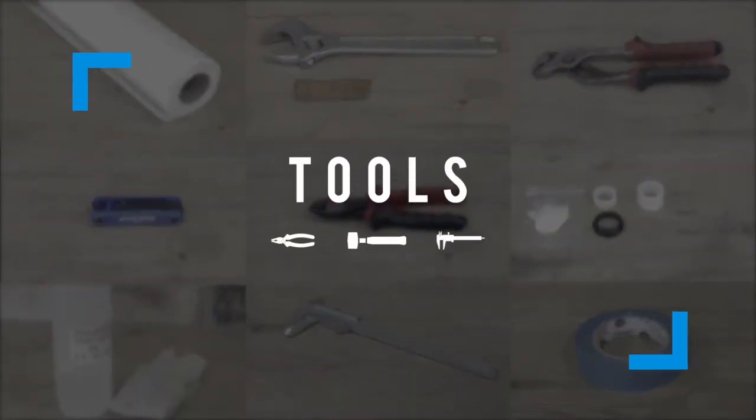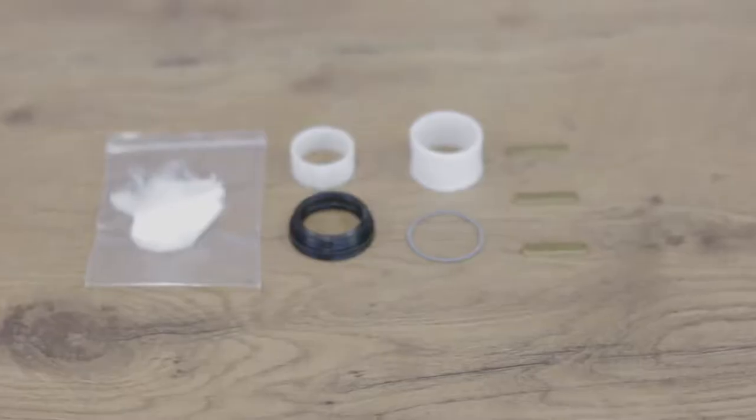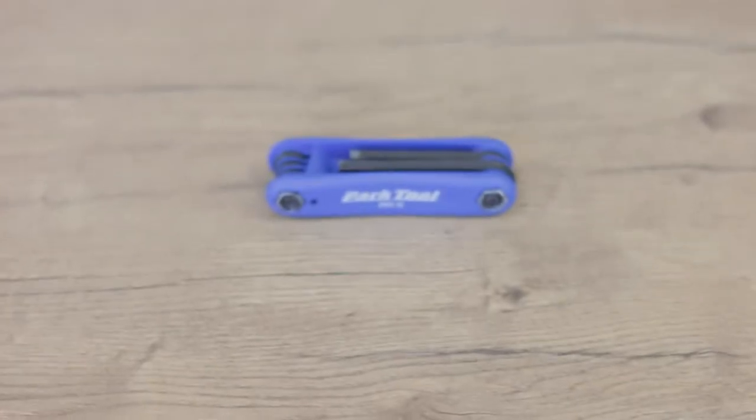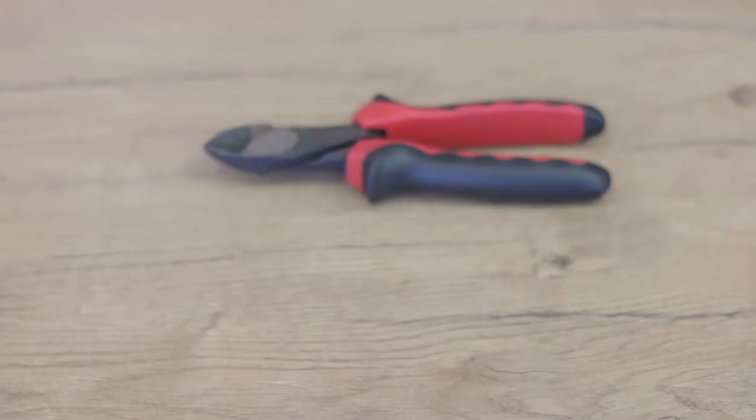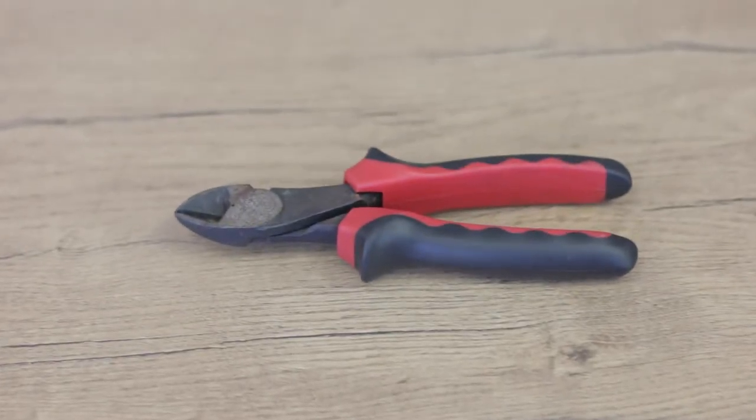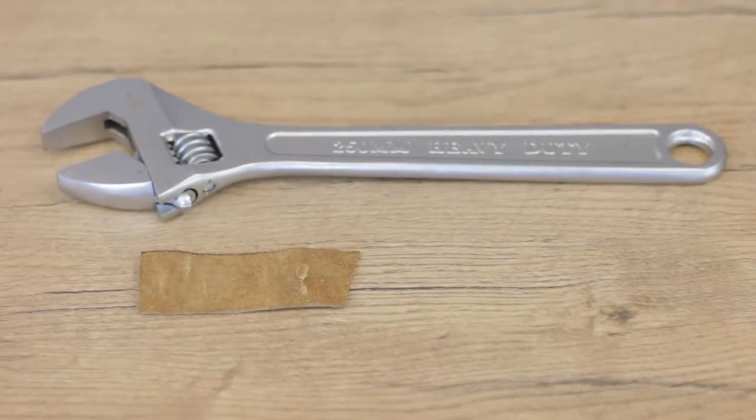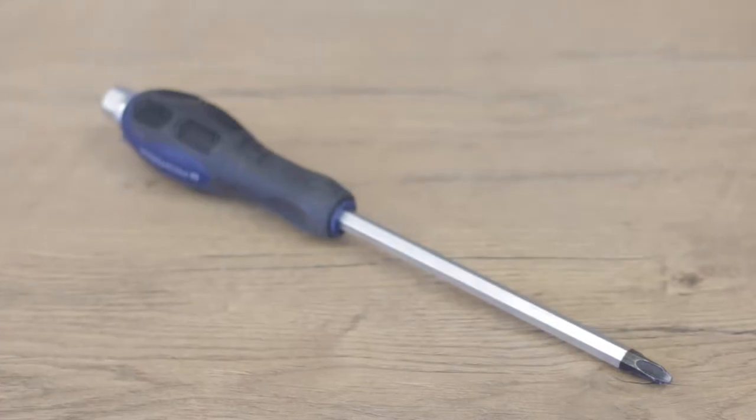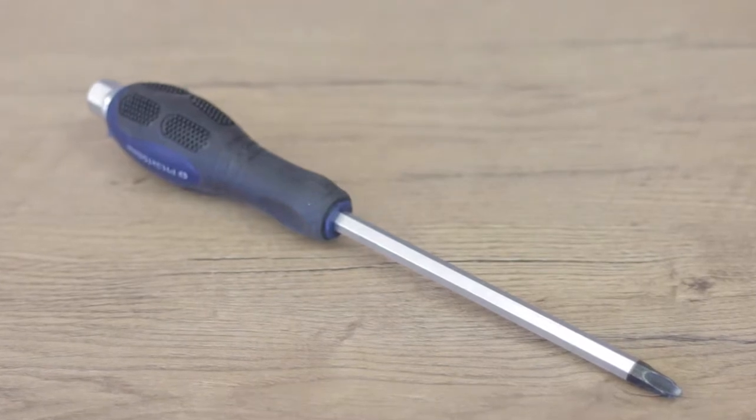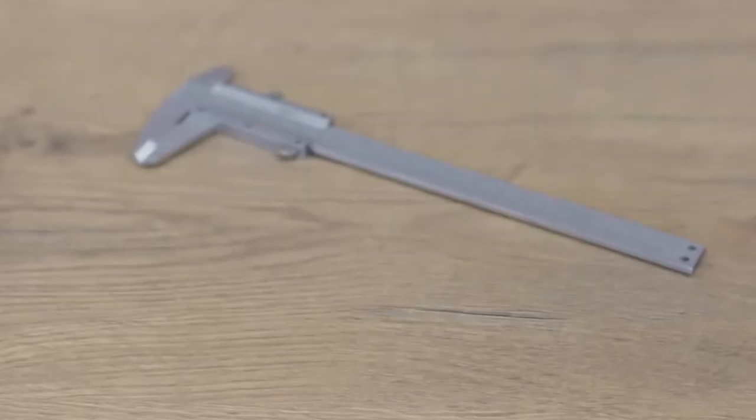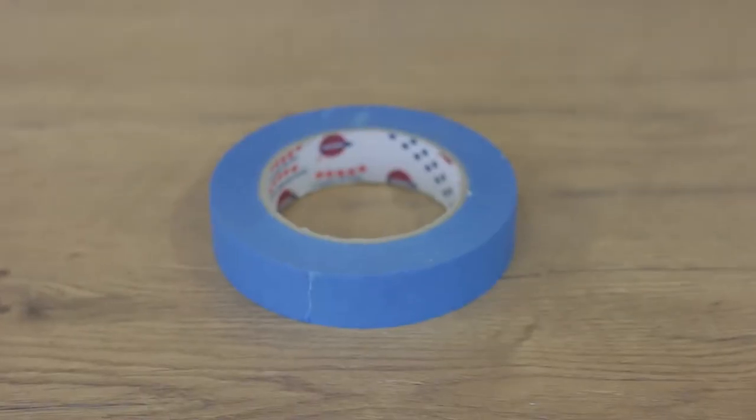These are the tools you'll need for the service: a Contour internal service kit, an allen key multi-tool, side cutter pliers, a rubber mallet, a shifting spanner with a piece of leather, a long screwdriver, some paper towel, some isopropyl alcohol with a cloth you don't mind throwing away, a vernier caliper and some masking tape.